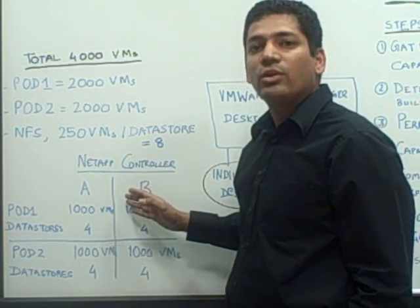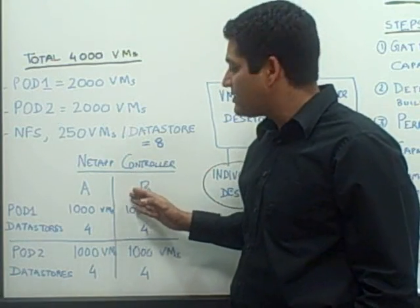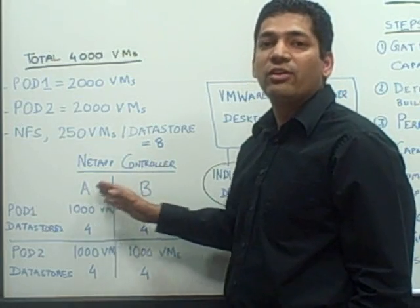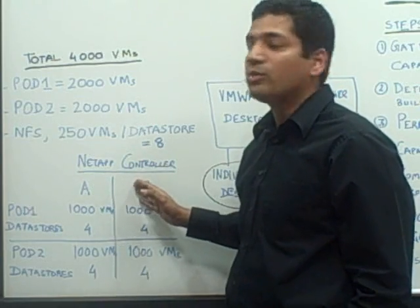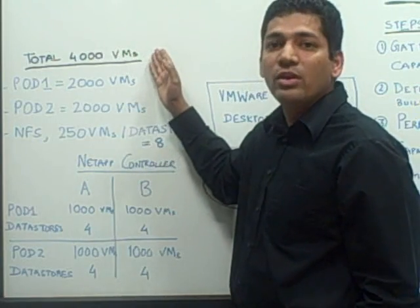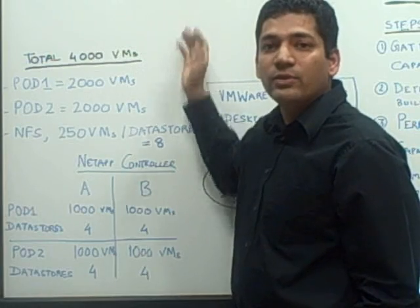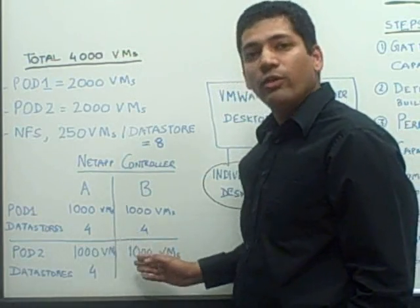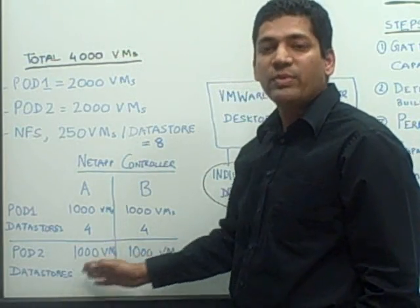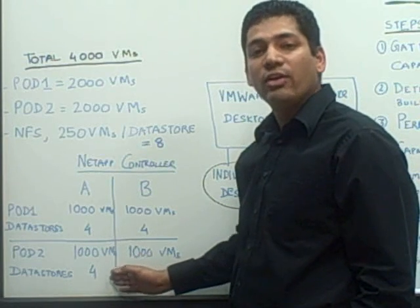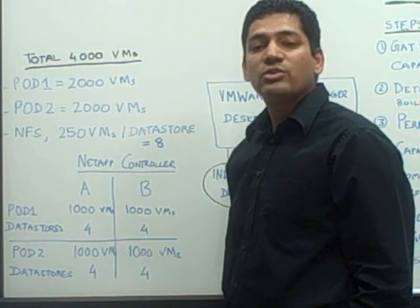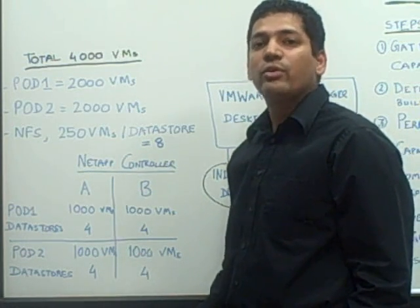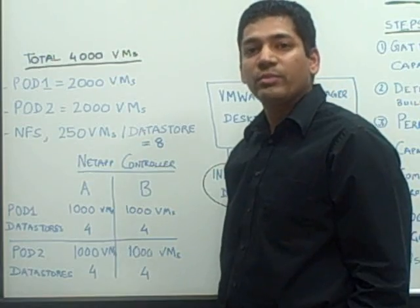This approach ensures that as the environment scales, the workload is balanced across the controllers. So if the customer plans to scale up to 10,000 VMs and continues following the best practice of splitting the load across storage controllers, they are never going to have performance issues.